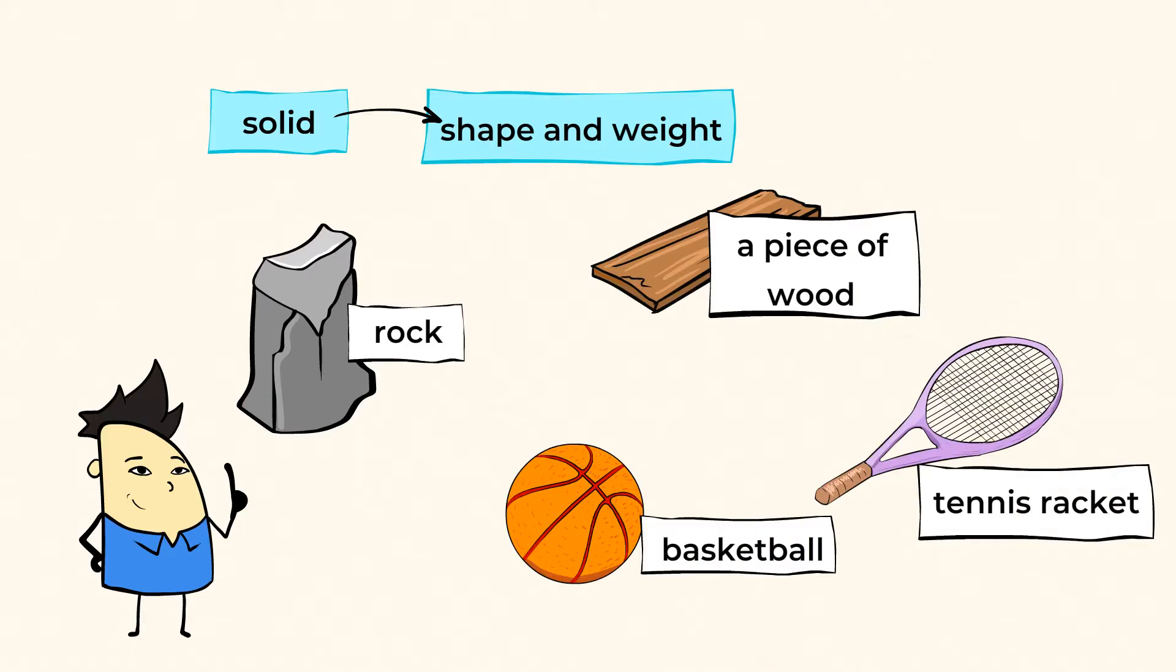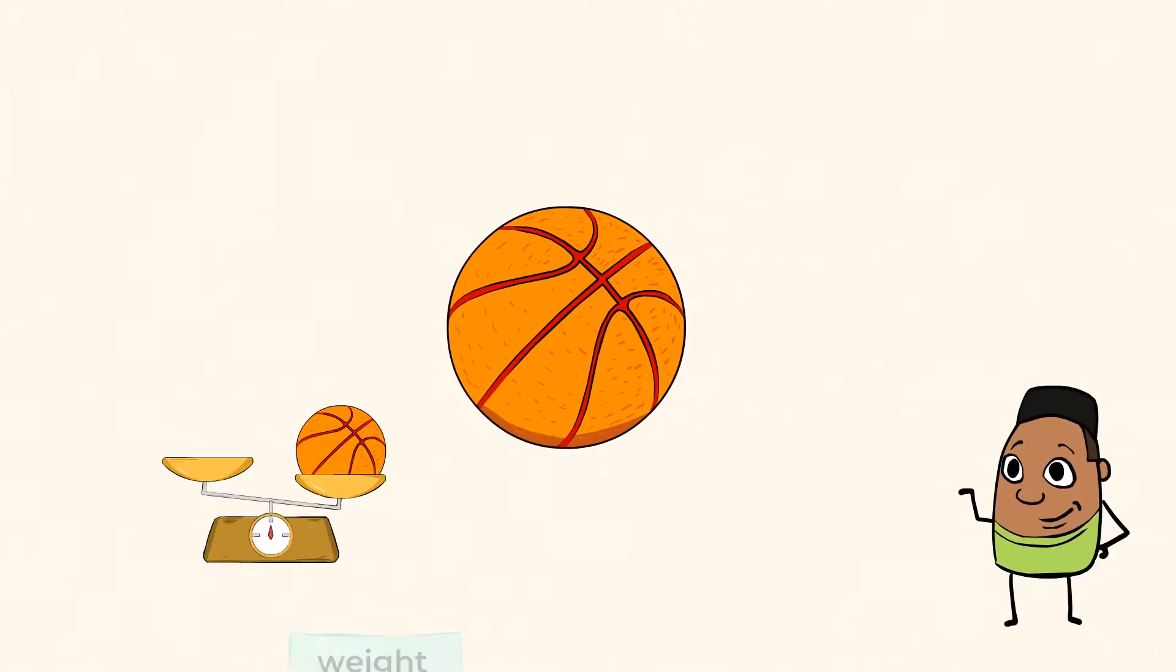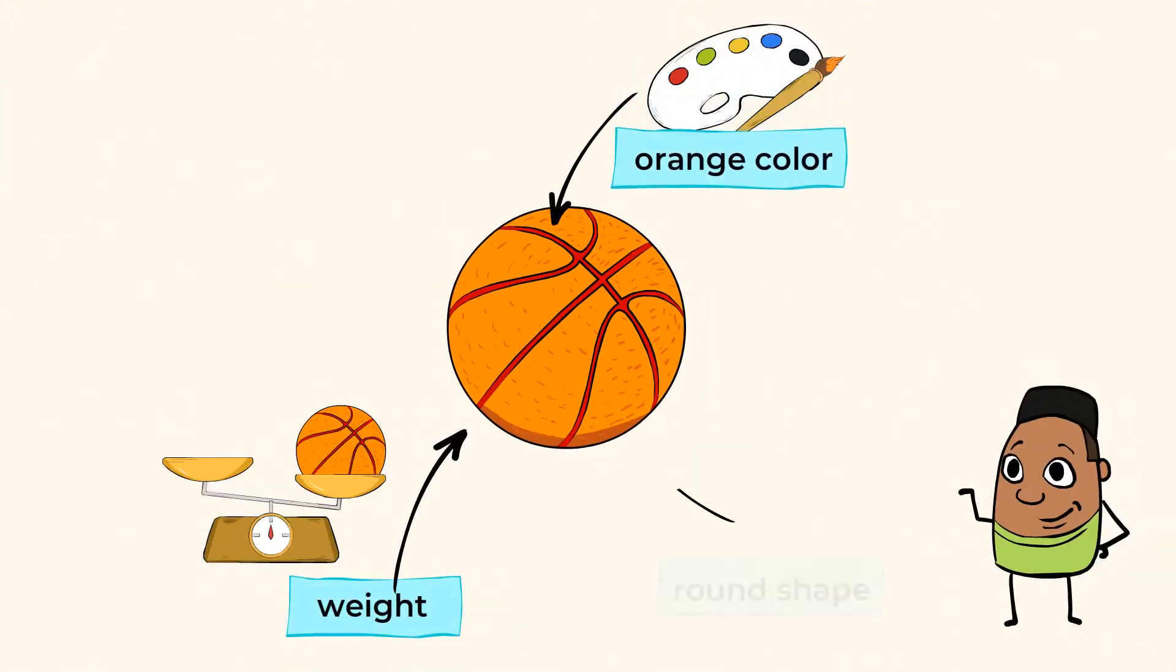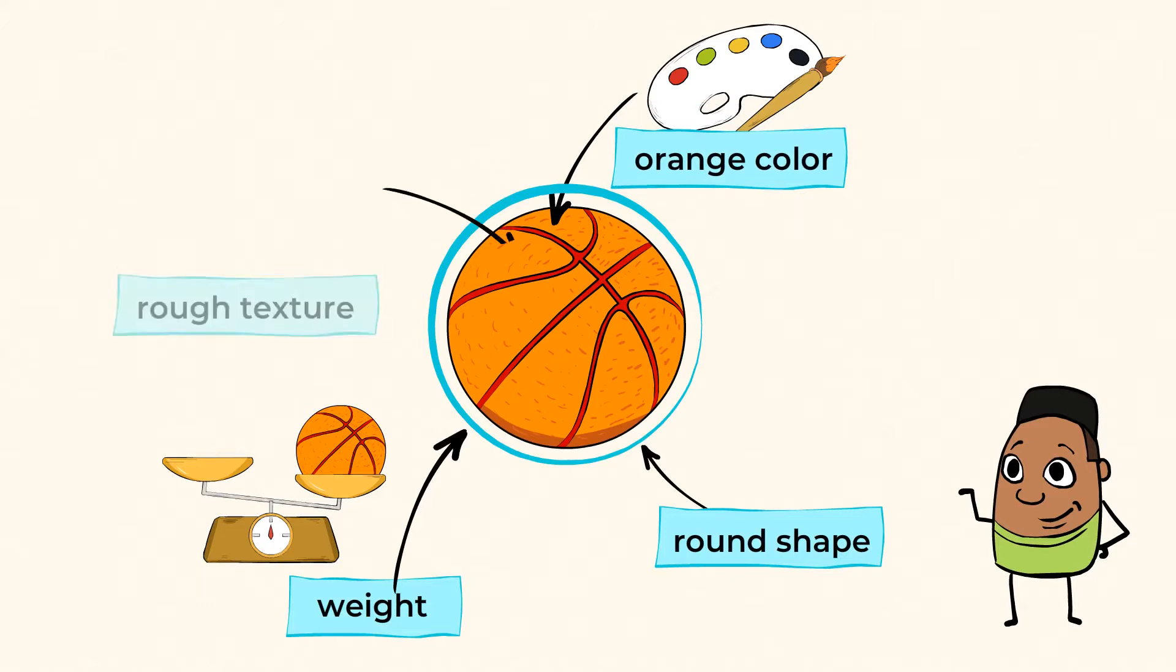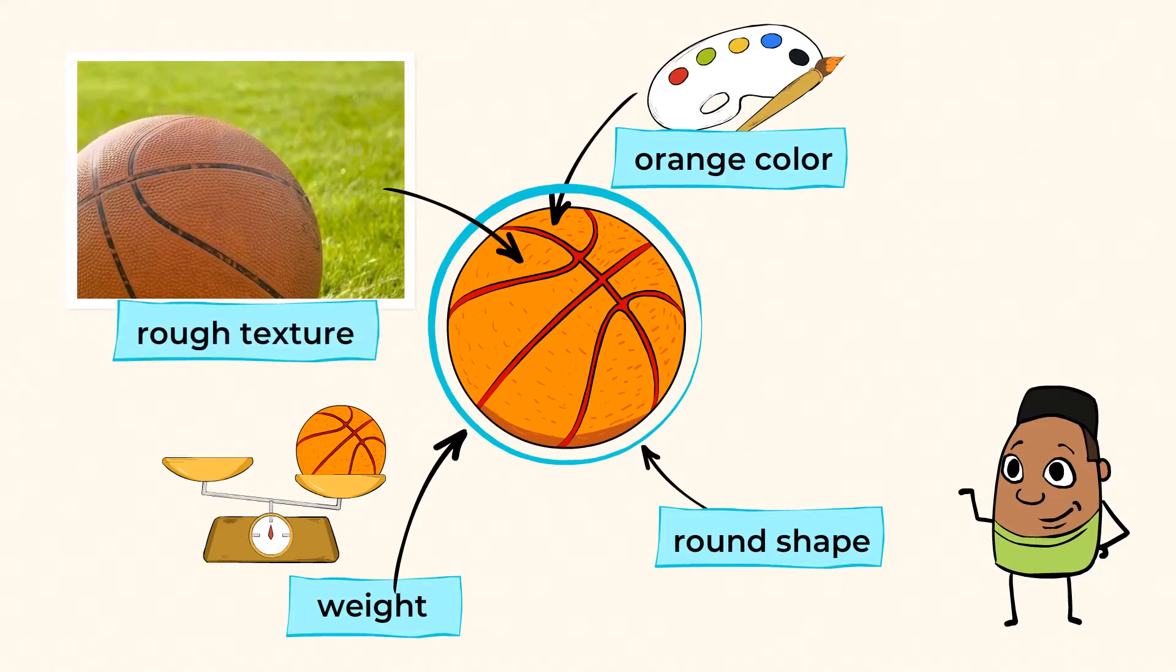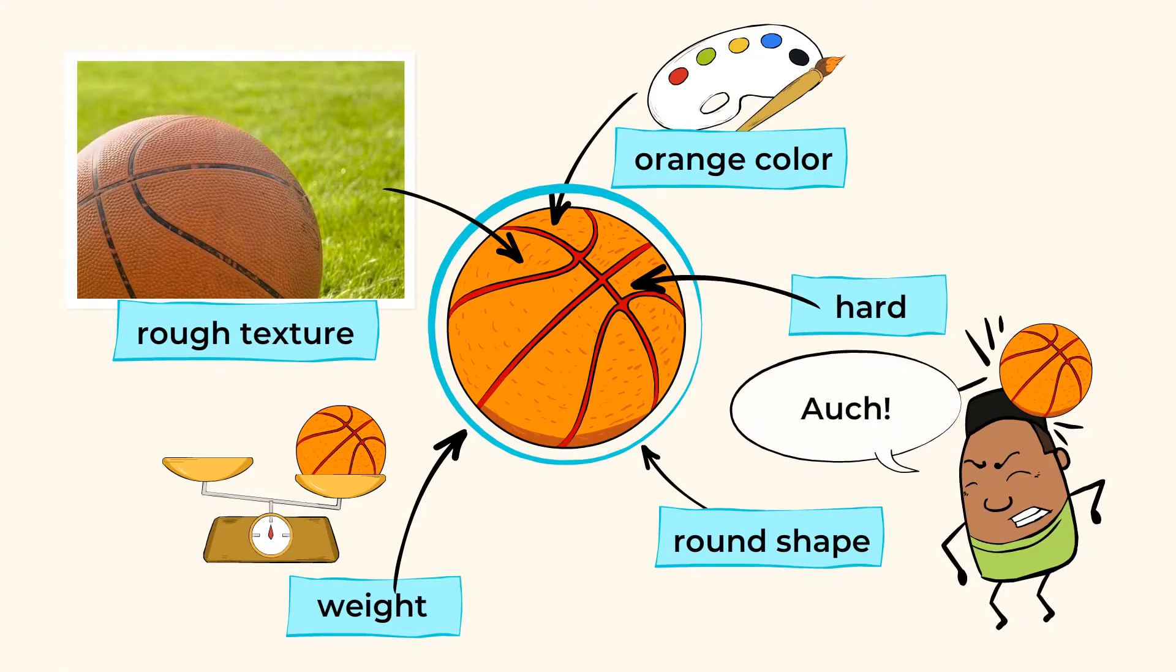Let's take a closer look at that basketball. Now it weighs. It has an orange color and a round shape. It also has a rough texture with little tiny bumps all over it. And it's rather hard, so if you get hit by one, it could hurt you.